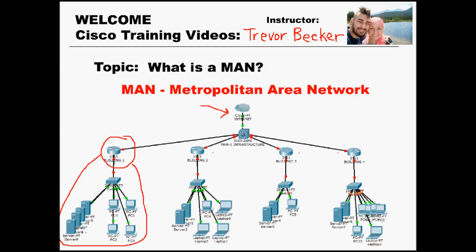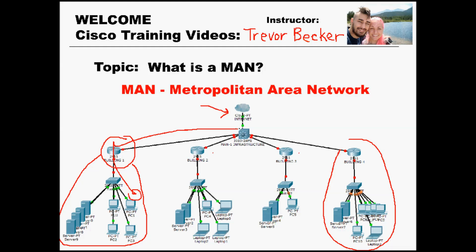So if the host in building 1 needed to communicate to the host in building 4, they can do so through their MAN. All the host would end up doing is go through their gateway, travel through the MAN, and then connect to the other building — all without having to traverse the internet.